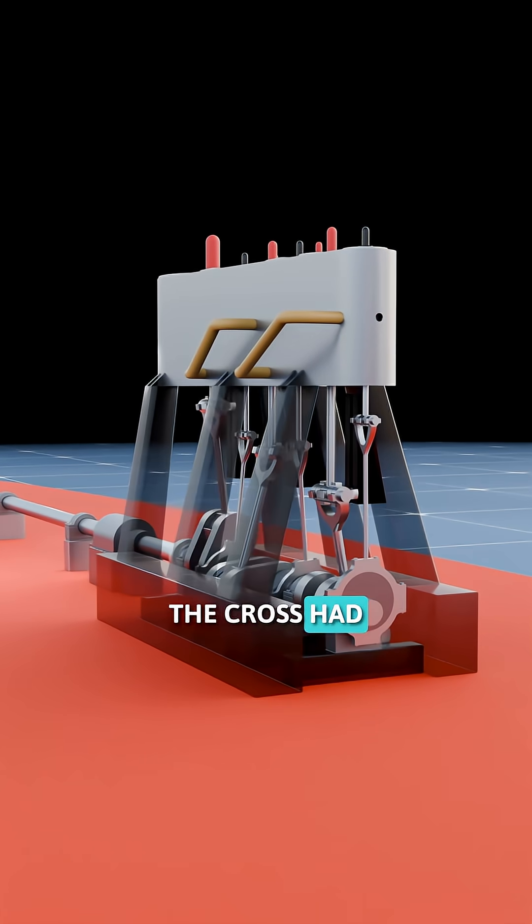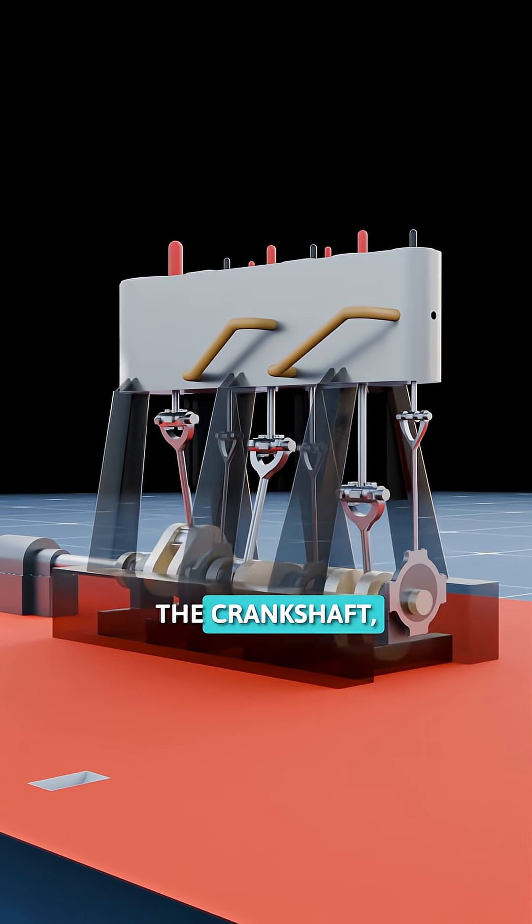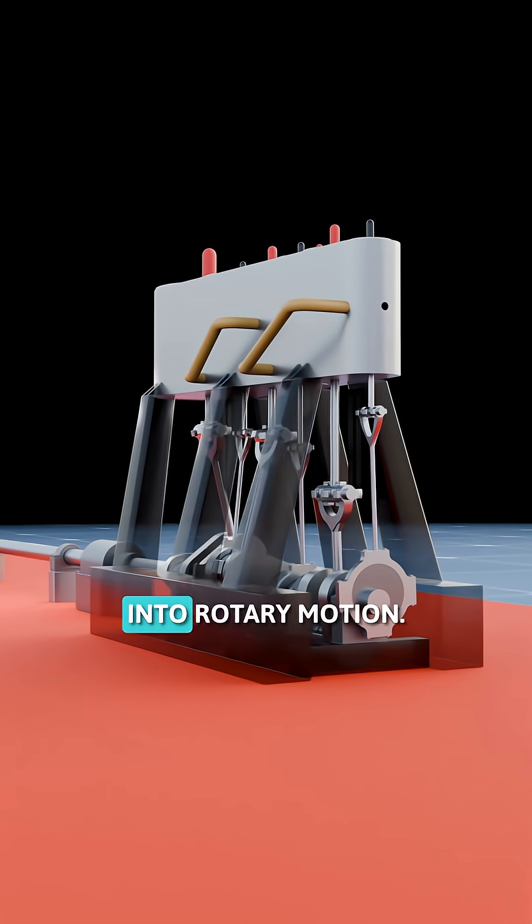The crosshead transferred motion to a connecting rod, which in turn rotated the crankshaft, converting the up and down movement of the pistons into rotary motion.